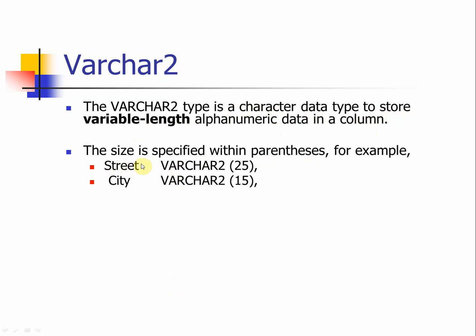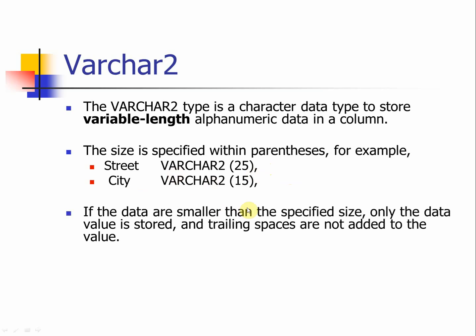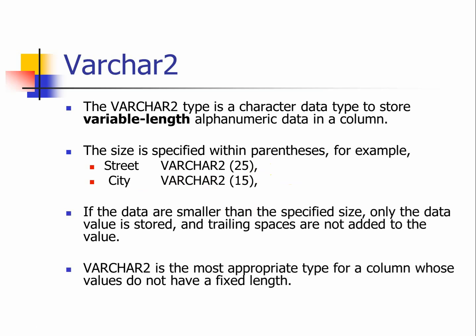For example, street — like 201 Donaghy Avenue — obviously everyone has a different address format and the length will be different, so using VARCHAR2 is a safe way to store that information, and city as well. If the data is smaller than the specified size, only the data value is stored and everything else is freed, saving space. VARCHAR2 is the most appropriate type for columns whose values do not have a fixed length, such as company name, person's name, address, and so on.